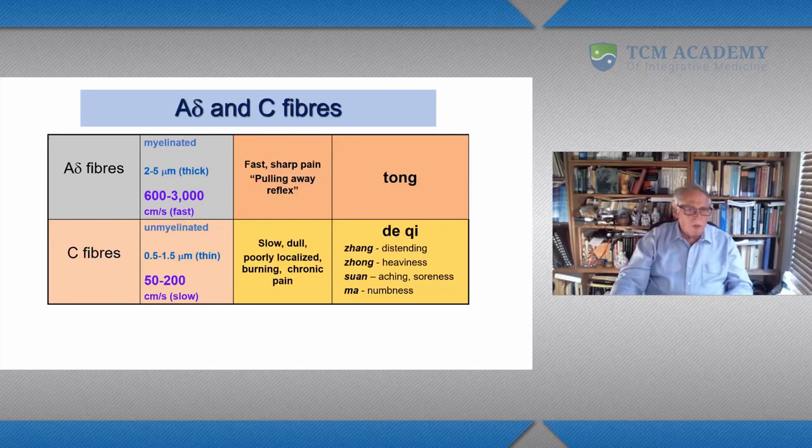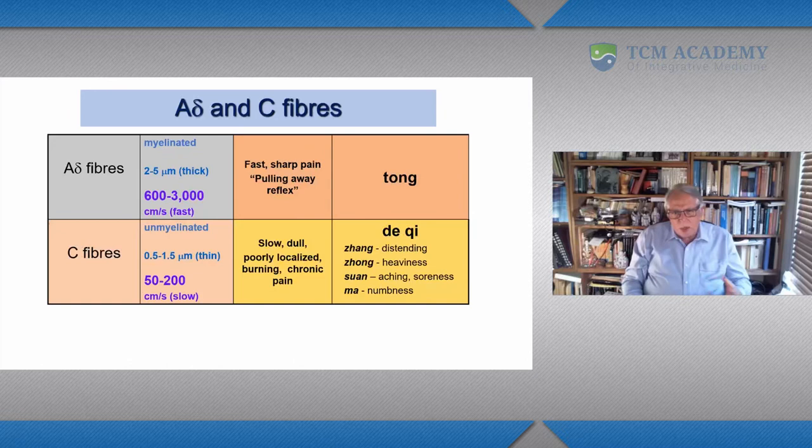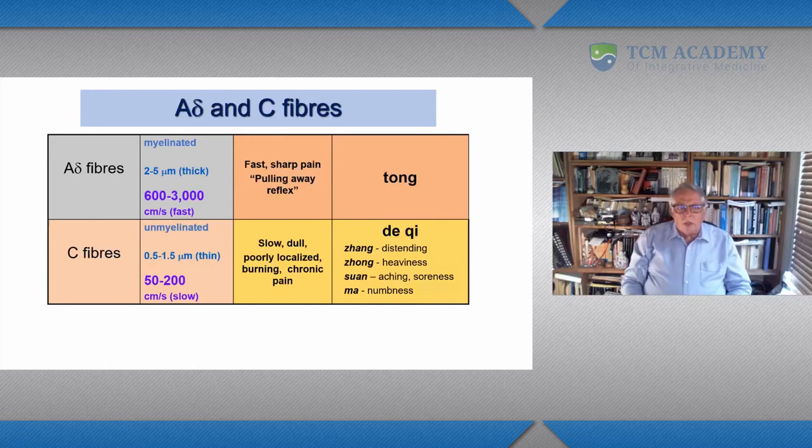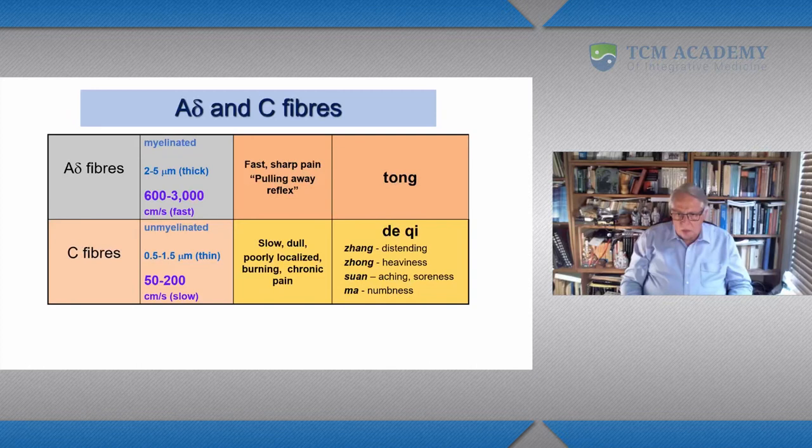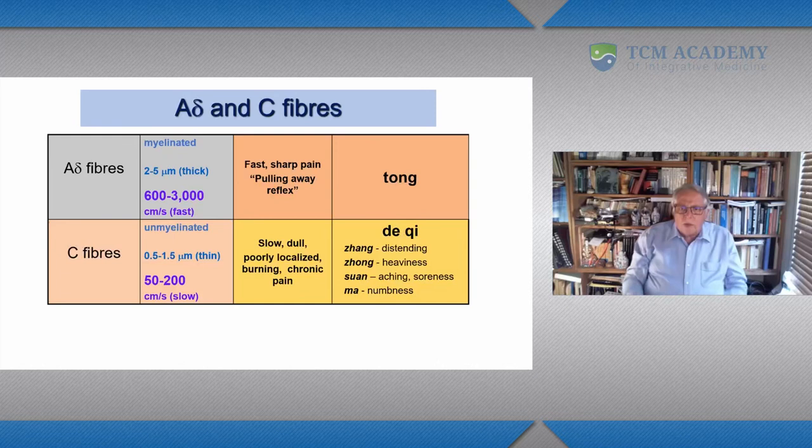If we look at that description we saw a moment ago of the C fiber sensations being dull and poorly localized, not that sharp, ouchy pain—so that sharp, ouchy pain, the Chinese called tong. The other de qi sensations that are classically described: zhang, zhong—excuse my lack of tones—distending, heavy, sore, achy, or numb.